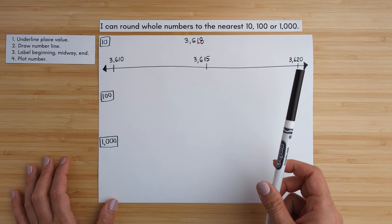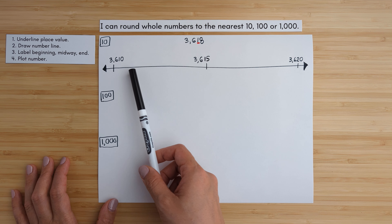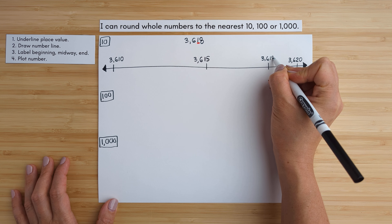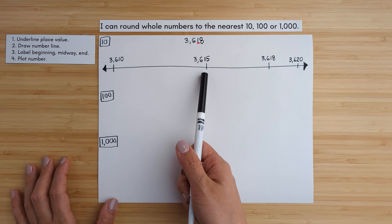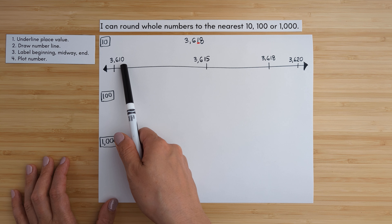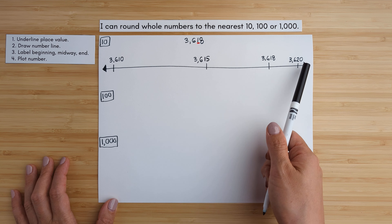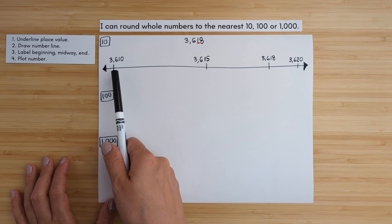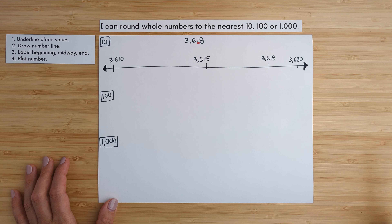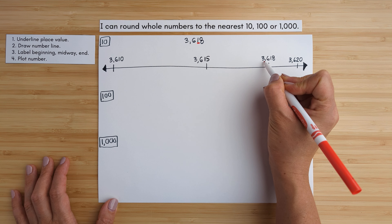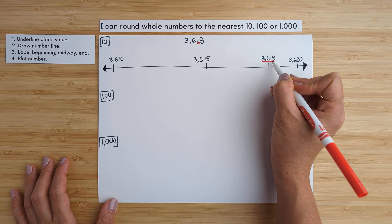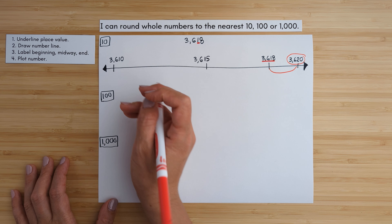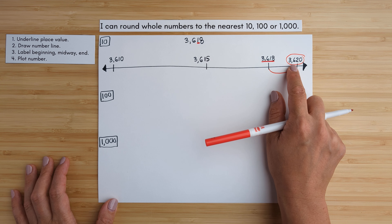The last thing you do is plot your number. So 3,618 goes about here. If it's confusing how to find the beginning, end, and midway point, just look at the ones digits first and then the tens — it helps you see it on a smaller scale: 10, 15, 18, 20. So 3,618 is physically closer to 3,620 versus 3,610, so 3,618 rounds to 3,620.